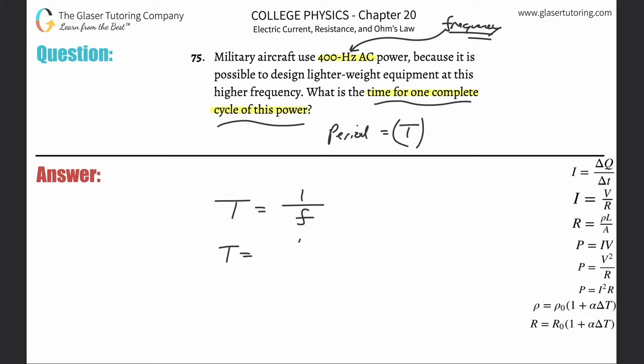So simply take now the frequency value of 400 hertz and plug it in. Remember hertz is the standard unit for frequency. That's also one hertz is also equal to one second minus one or per second. Or in other words, it's known as cycles per second.